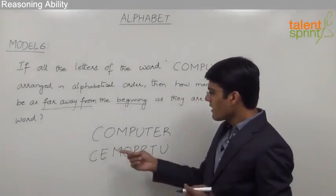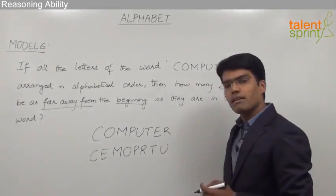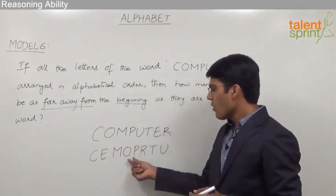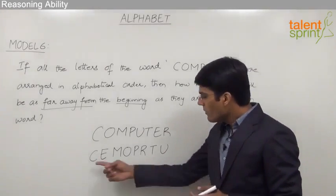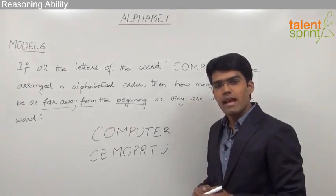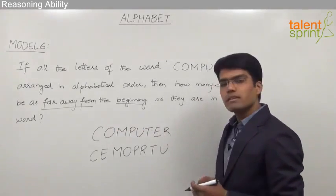So as you have seen here, all the letters have been arranged as per the alphabetical order, that is C E M O P R T U. Now we need to check how many of these letters are as far from the beginning as they are in the original word computer.